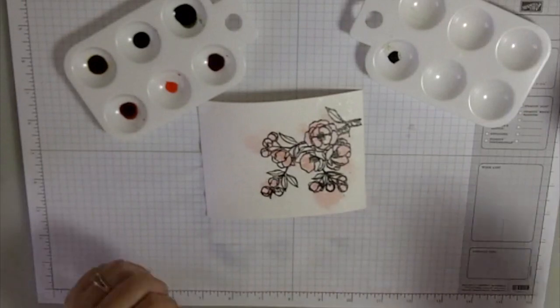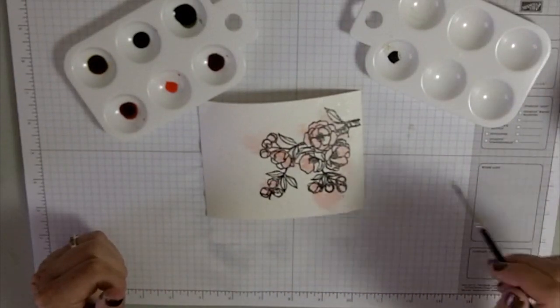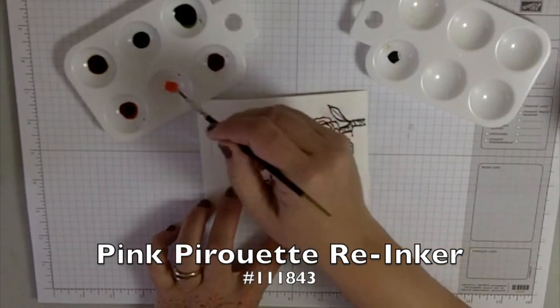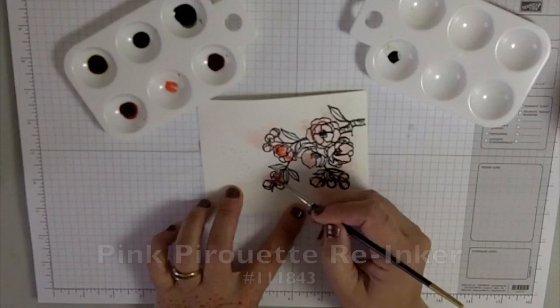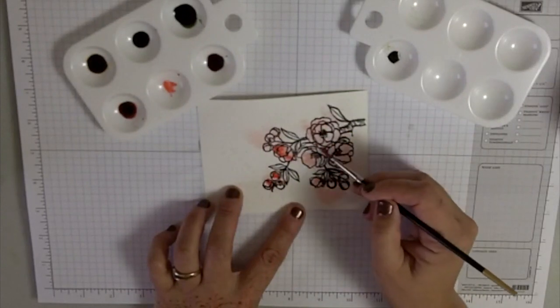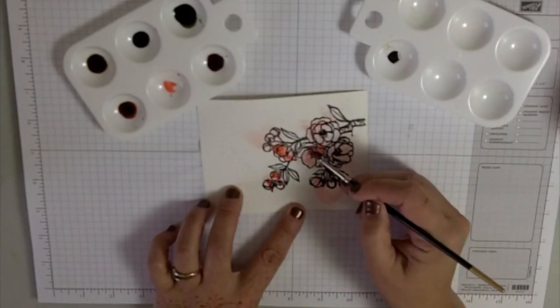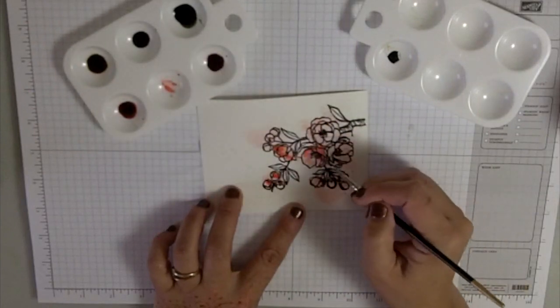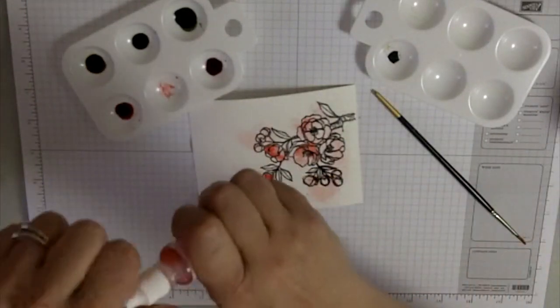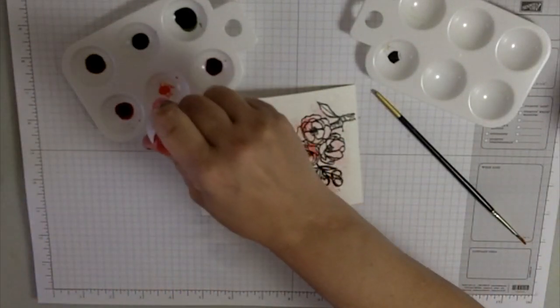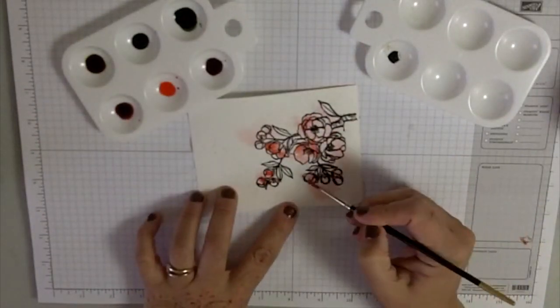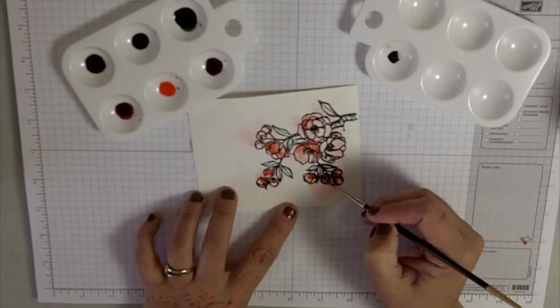The next color I'm going to take is Pirouette Pink. I'm going to be a little more picky—I'm going to really pop in the color. Now remember I dried this, so now that I've dried it, this color will be a little bit more intense because it's not going to spread as much.